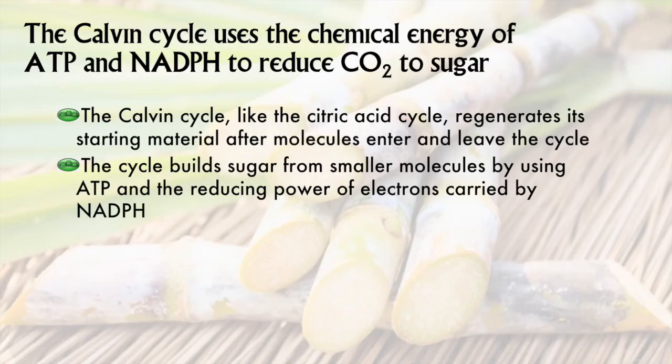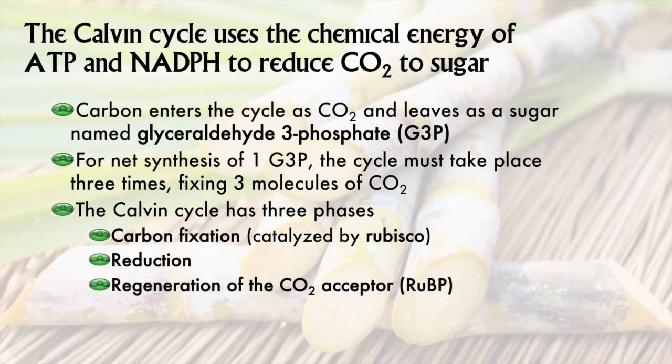Both are cycles, meaning they regenerate their starting materials as materials enter and leave. But the Calvin cycle performs an amazing feat: reducing the carbon atom of carbon dioxide to produce sugars. In the overview, I told you that glucose is not the sugar produced directly from photosynthesis. That title belongs to another carbohydrate called glyceraldehyde-3-phosphate.